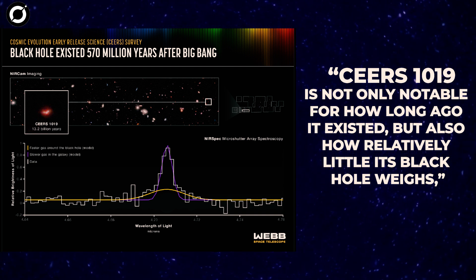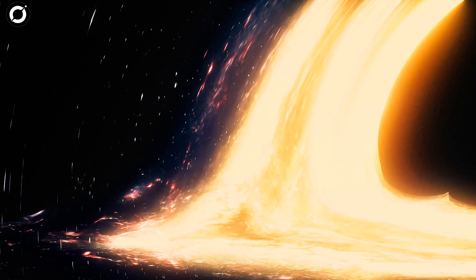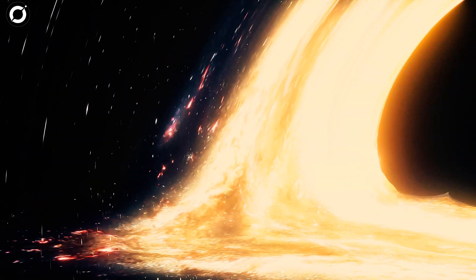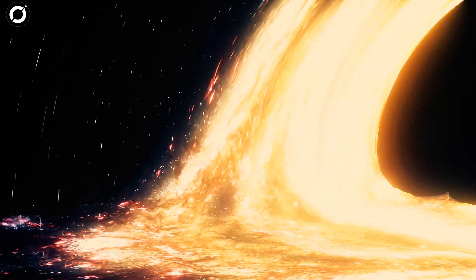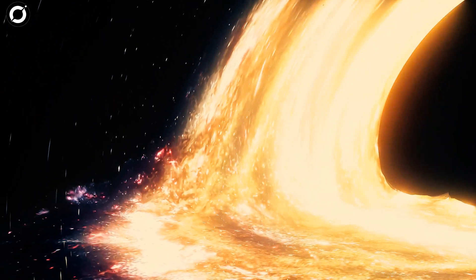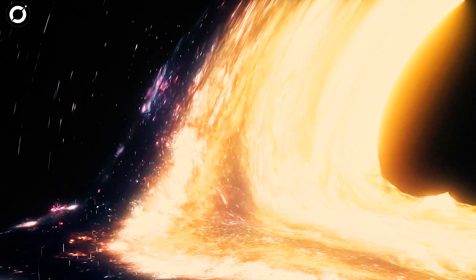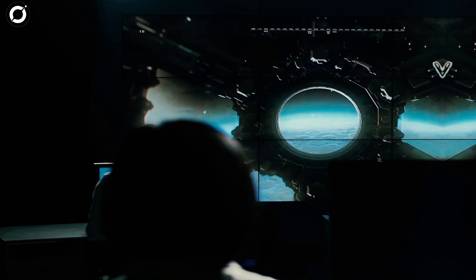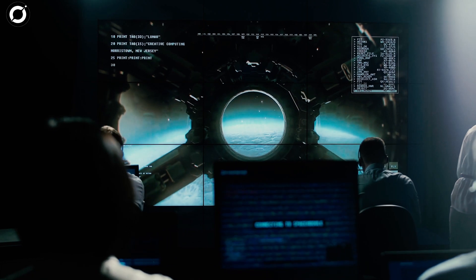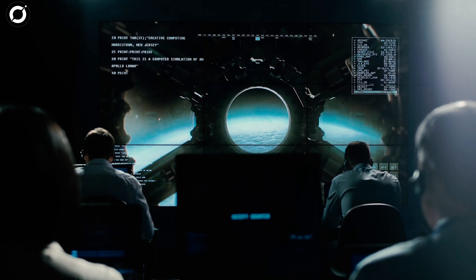CEERS 1019 is not only notable for how long ago it existed, but also how relatively little its black hole weighs. NASA explains it weighs nine million times more than the sun, which is a lot, but not compared to the giants often found at the center of galaxies in the young universe, which are one billion times or more heavier.